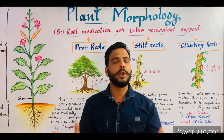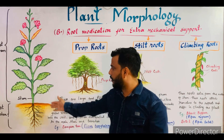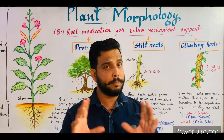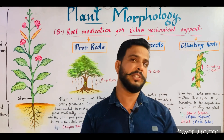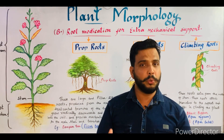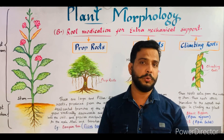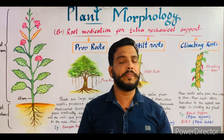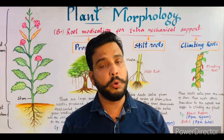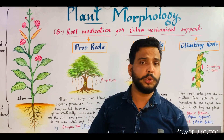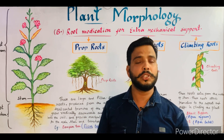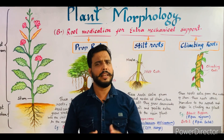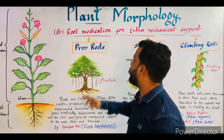In my last lecture I told you what modification is. Generally you can see the plant consists of a normal type of root, but sometimes these roots get modified and perform some special types of functions, and this type of root is known as a modified root. In that video I told you about different kinds of roots such as radish and carrot, and their forms like fusiform, napiform, conical, etc.